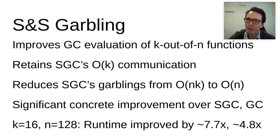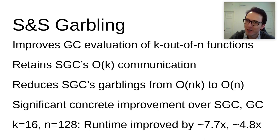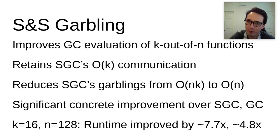In summary, the key contribution is that we improve garbled circuit evaluation of k out of n functions where the k choices are known to the garbled circuit evaluator. We retain the stack garbling communication complexity while simultaneously retaining the computation complexity of standard garbled circuit. The result is a significant concrete improvement over both stack garbling and the standard garbled circuit approach. For example, for n equals 128 and k equals 16, we improve over stack garbling by approximately a factor of 7.7 and over Yao's garbled circuit by a factor of 4.8. Thank you for listening!